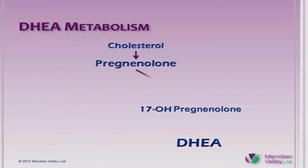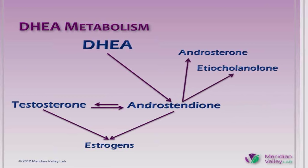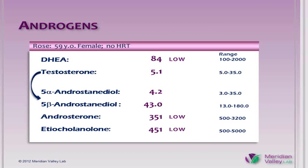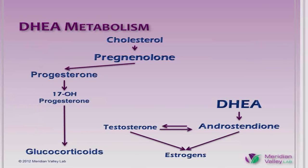A brief review of DHEA metabolism. Pregnenolone is made from cholesterol, and then goes through the intermediate 17-hydroxypregnenolone and then to DHEA. DHEA is then metabolized to androstenedione, which in turn metabolizes to testosterone and to the estrogens. Androstenedione also metabolizes to androsterone and etiocholanolone via the 5-alpha and 5-beta reductase pathways, and we generally consider those to be DHEA metabolites. This is how DHEA and its metabolites show up on the 24-hour urine hormone panel. There is a secondary pathway to androstenedione, testosterone, and the estrogens which does not require DHEA — that's from progesterone via 17-hydroxyprogesterone to androstenedione. That's not a major pathway.